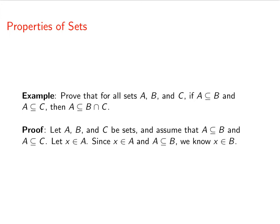Now, since X is an element of A and A is a subset of B, then we know that X is an element of B. In the same way, since X is an element of A and A is a subset of C, then we know that X is an element of C.